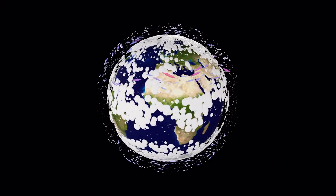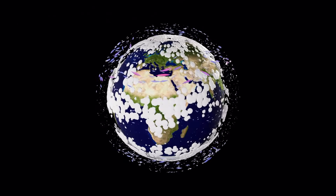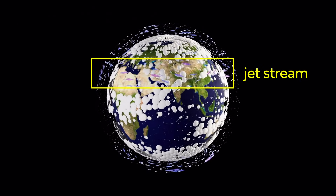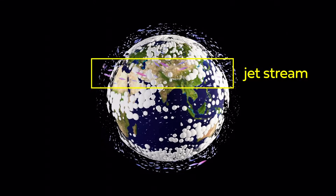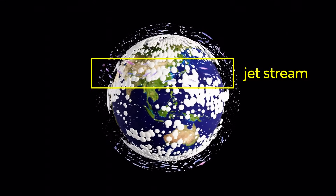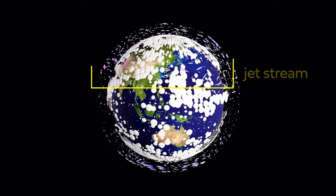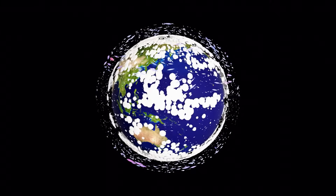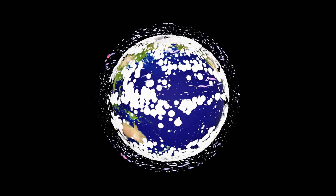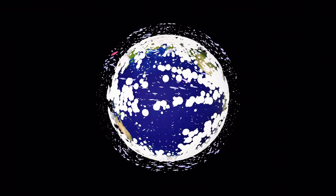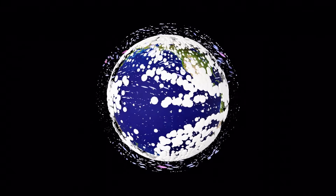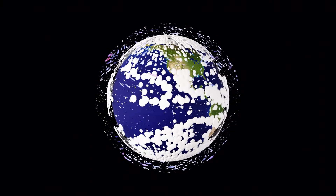Going up a little higher, about 10 kilometers above the surface, we find the jet streams. These are ribbons of very fast-moving air in the middle of each hemisphere. At any given time, there can be one or two jet streams in each hemisphere. In fact, if the Earth was slightly larger, there would be two at all times, but being the size it is, sometimes they just merge into one.